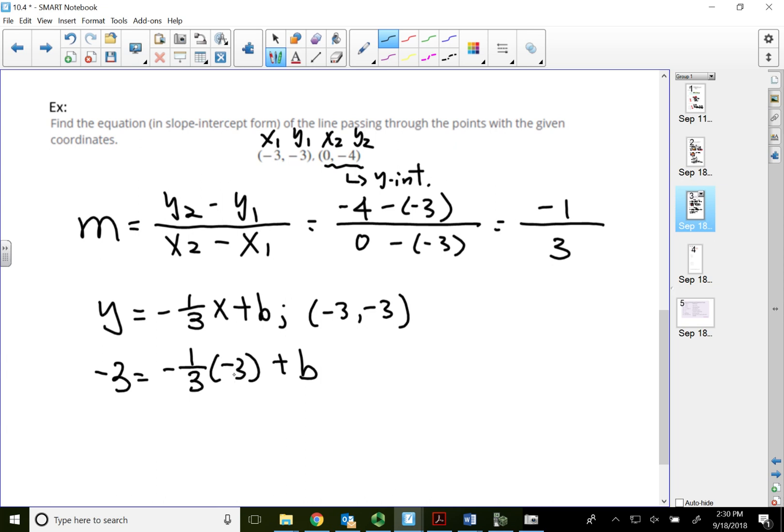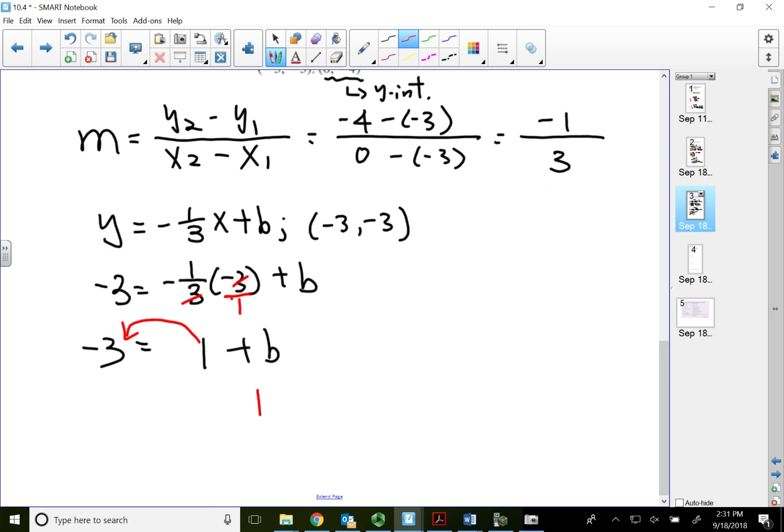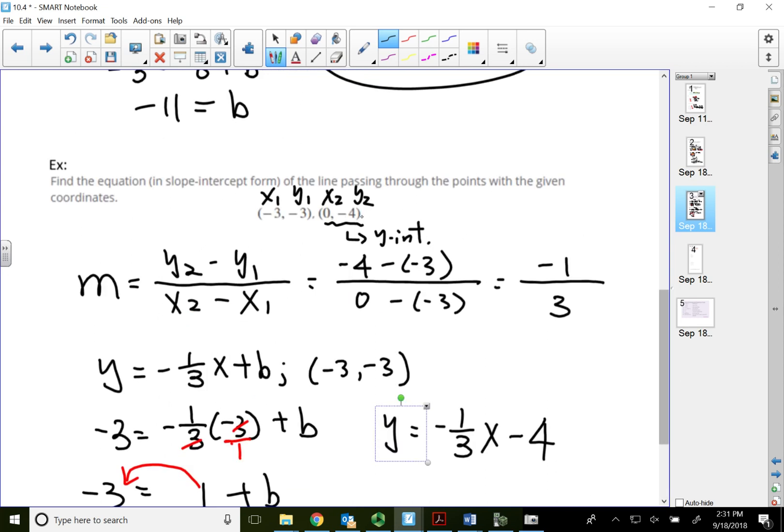So this is going to be negative 3 equal to negative 1 third times negative 3 plus b. Alright, negative 1 third times negative 3. Negative 3 means negative 3 over 1. So top 3, bottom 3 cancels out. Negative times negative become positive 1, right? Because everything canceled out, so that becomes positive 1. Negative times negative is positive. Plus b equals to negative 3. So what happens when I move my positive 1 over? That becomes minus. So my b is equal to negative 3 minus 1. So b is equal to negative 4. There you go. So y equals, my answer, y equals negative 1 third x minus 4. So this b is the y value of the y intercept. Alright, so that's my answer right there.